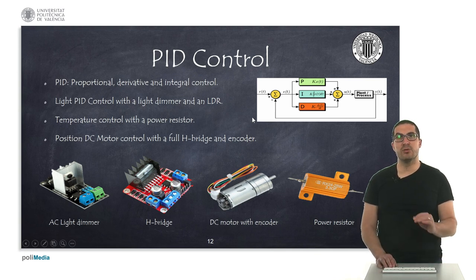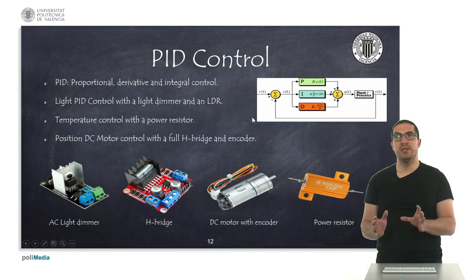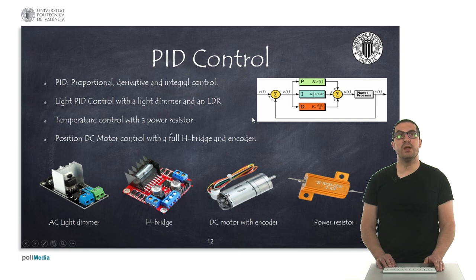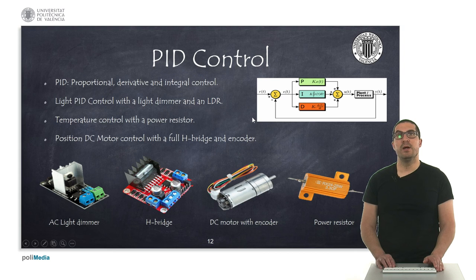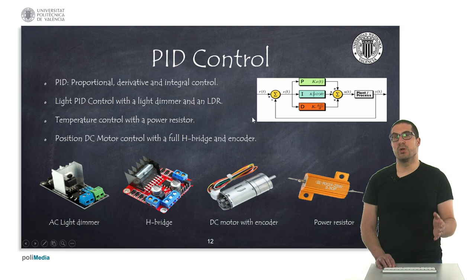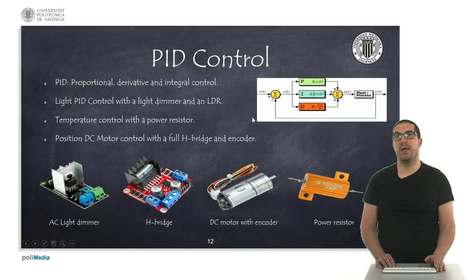Within PID control we can have, for instance, light control in which we can dim the light with appropriate electronics — such as an AC light dimmer — using an LDR. Or we can regulate temperature with much more accuracy, or control the position of a DC motor with a full H-bridge and an encoder.